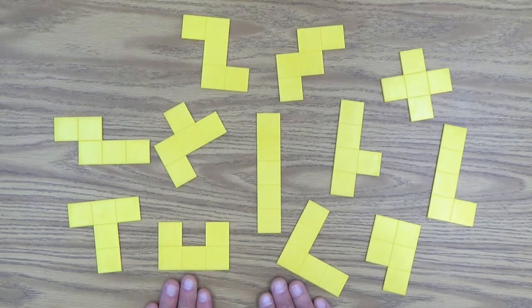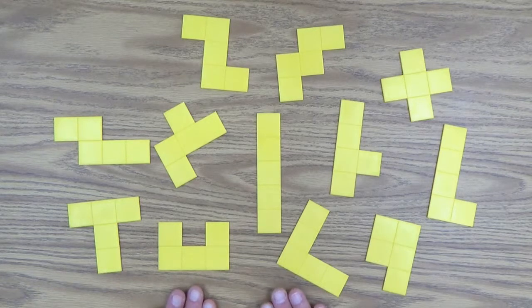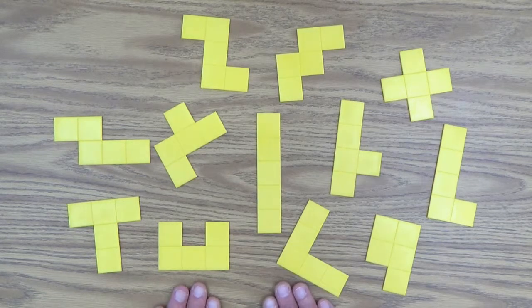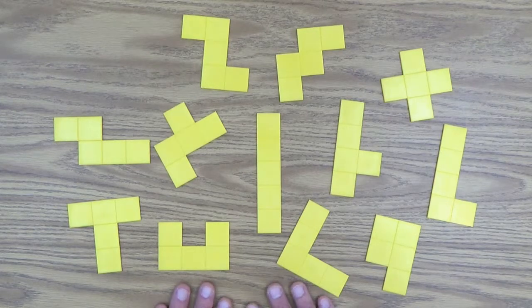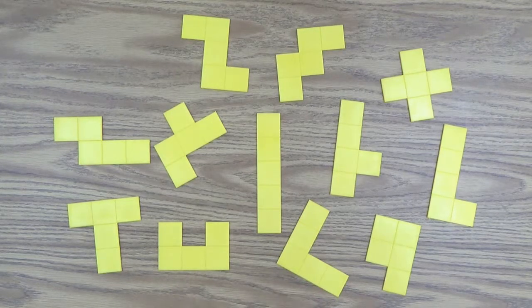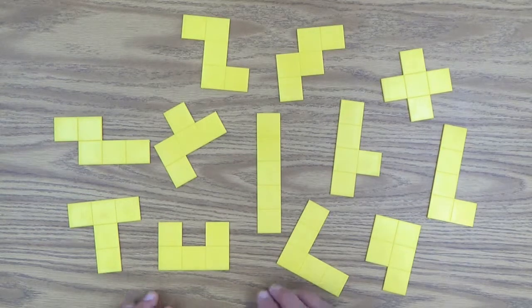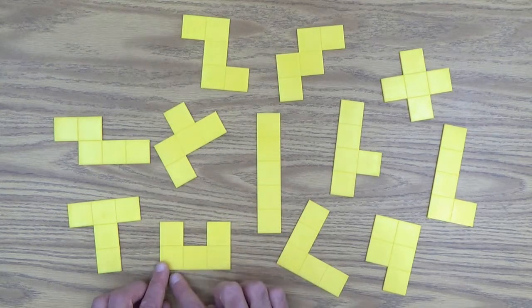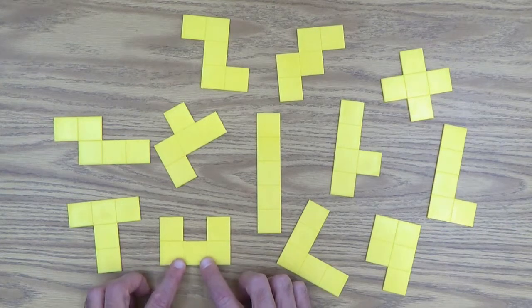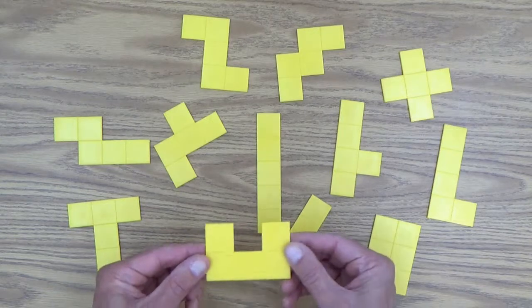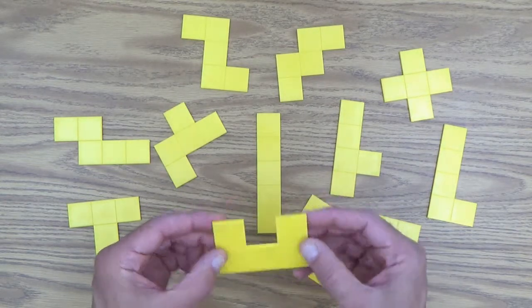And they come in 12 different configurations, and I have all 12 out in front of me here. This is the minimum pieces you would need for a set of pentominoes. So 12 different configurations, and you can see there are little lines that show you the squares that delineate the squares.